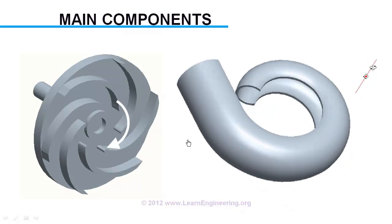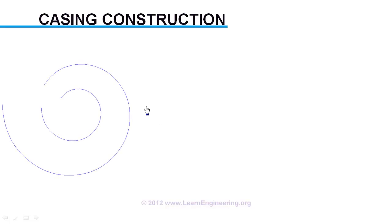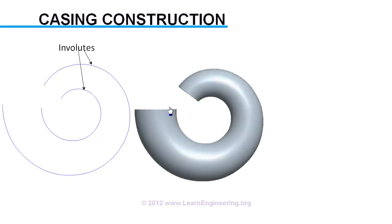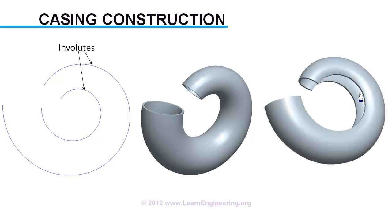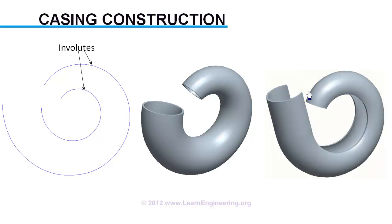It will be interesting to know about construction details of volute casing. Casing is made on two volute curves which are at offset. A three-dimensional volute is made from these curves. A portion is removed from volute shape in order to accommodate the impeller in it. A discharge nozzle is fit at exit portion of the casing, most of the time discharge nozzle is diverging in shape.